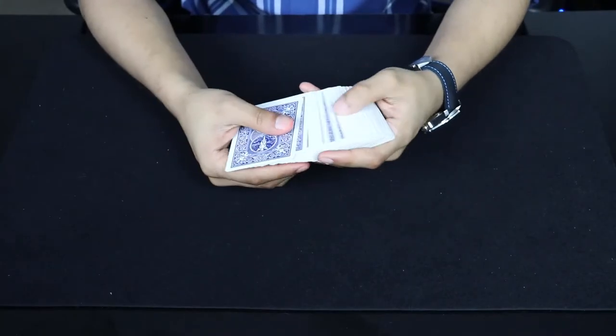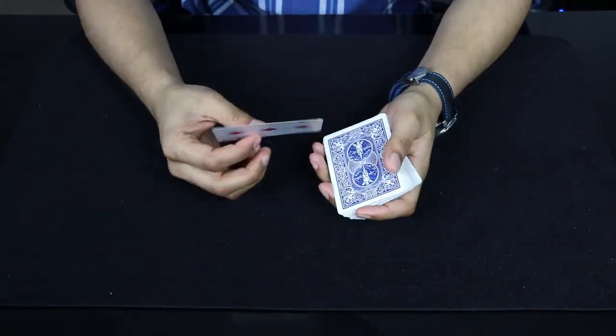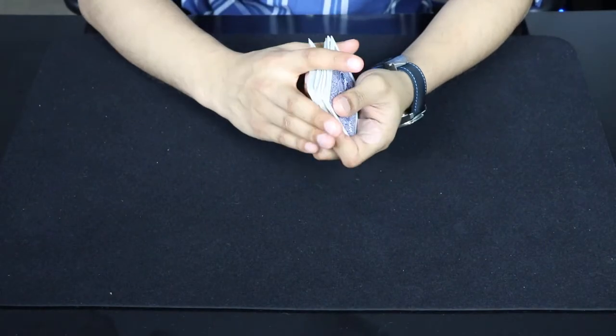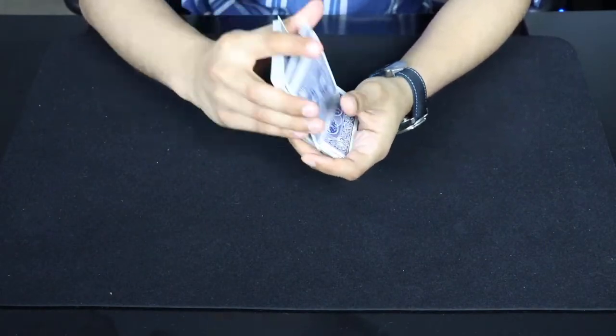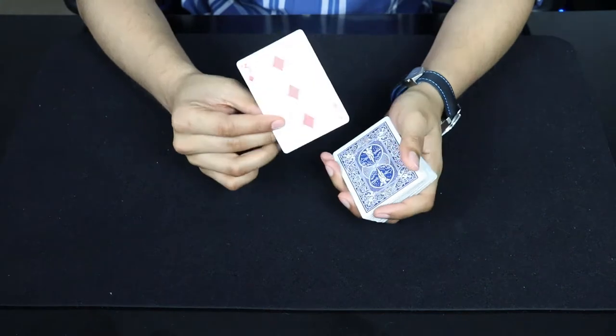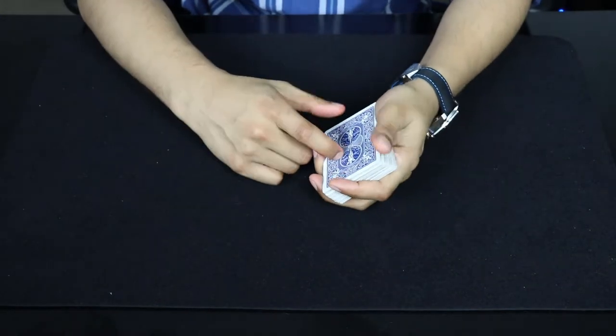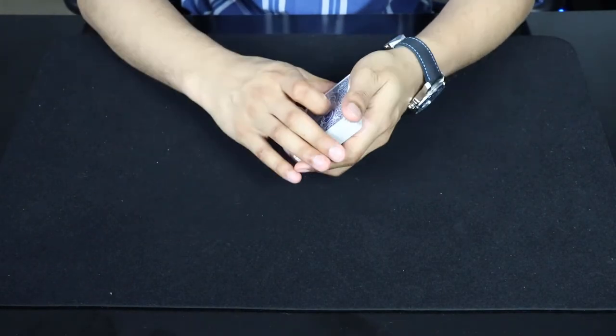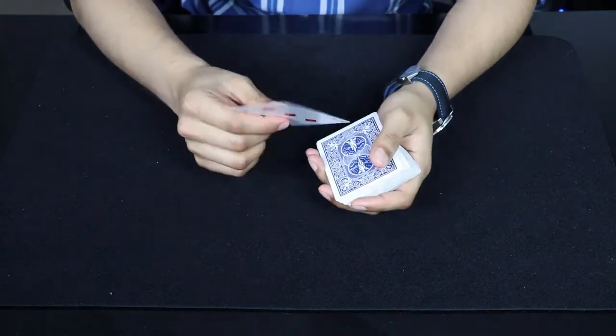So getting into how I did the trick, let's say we have the Three of Diamonds selected, I put it on top. And I'm going to use a controlled shuffle, controlled overhand shuffle, to retain that card on top. If you don't know how to do that, I have a video on it so you can make sure to check it out. Link in the description and hopefully on the screen.